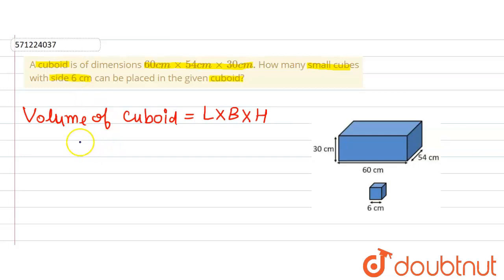Putting in the values, we will get volume of cuboid is equals to length is 60 multiplied by 54, that is breadth, multiplied by 30 cm cube. Now on solving it further, we will get 97,200 cm cube. So this is the volume of cuboid.